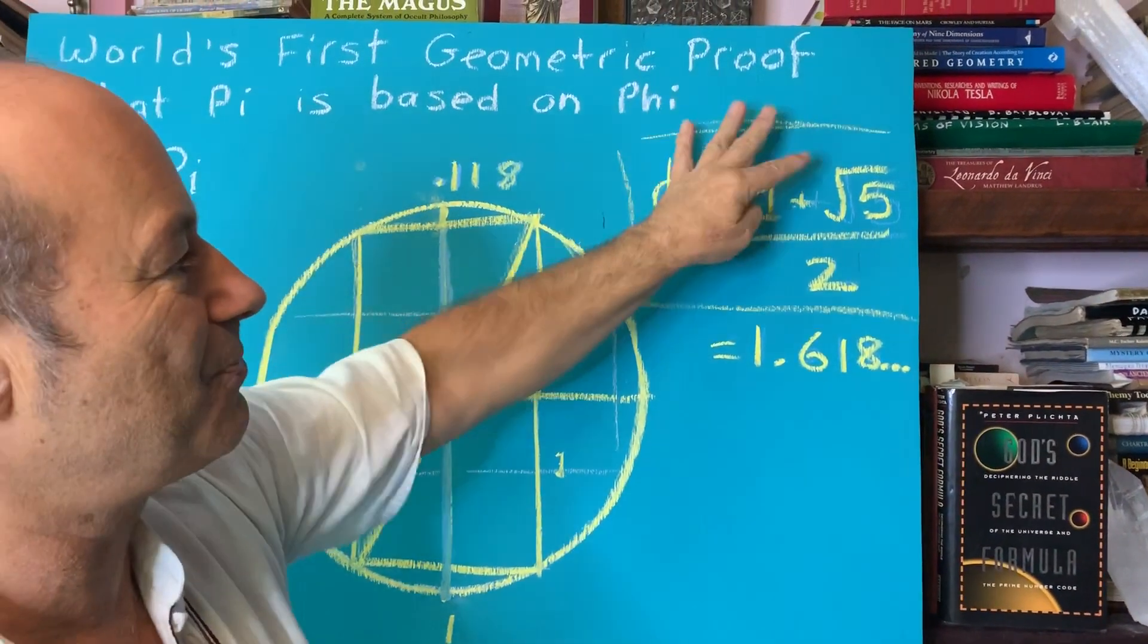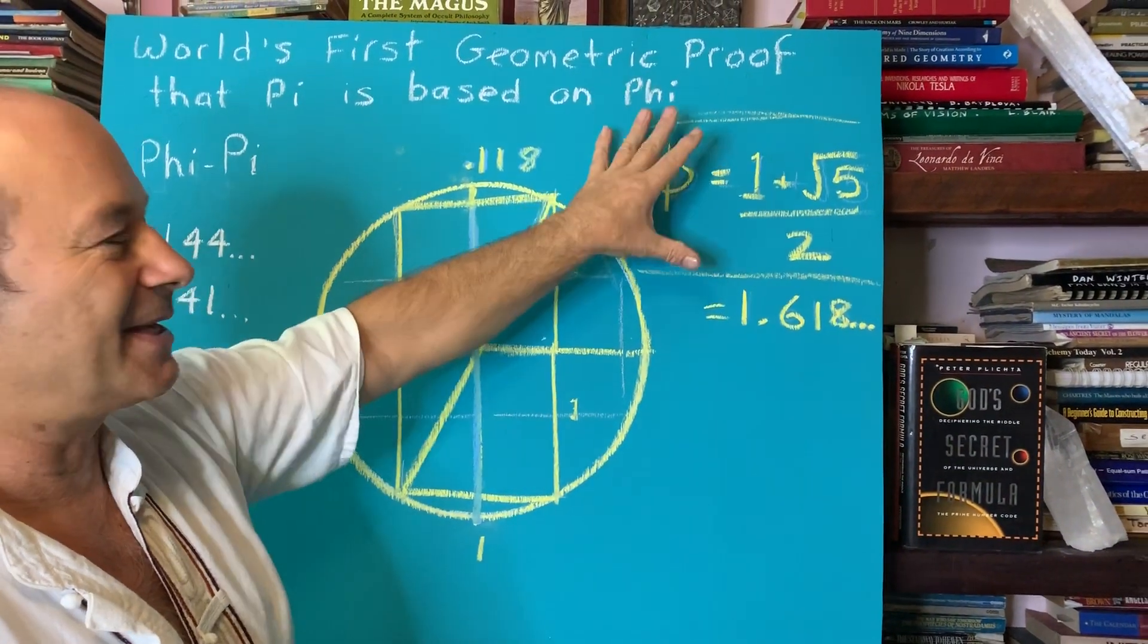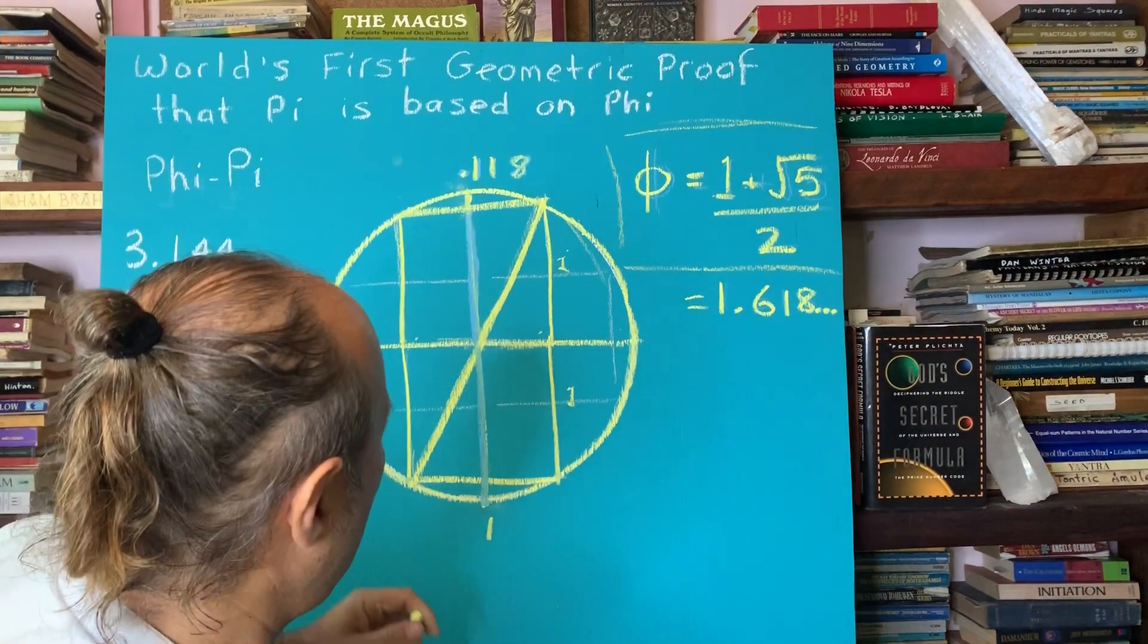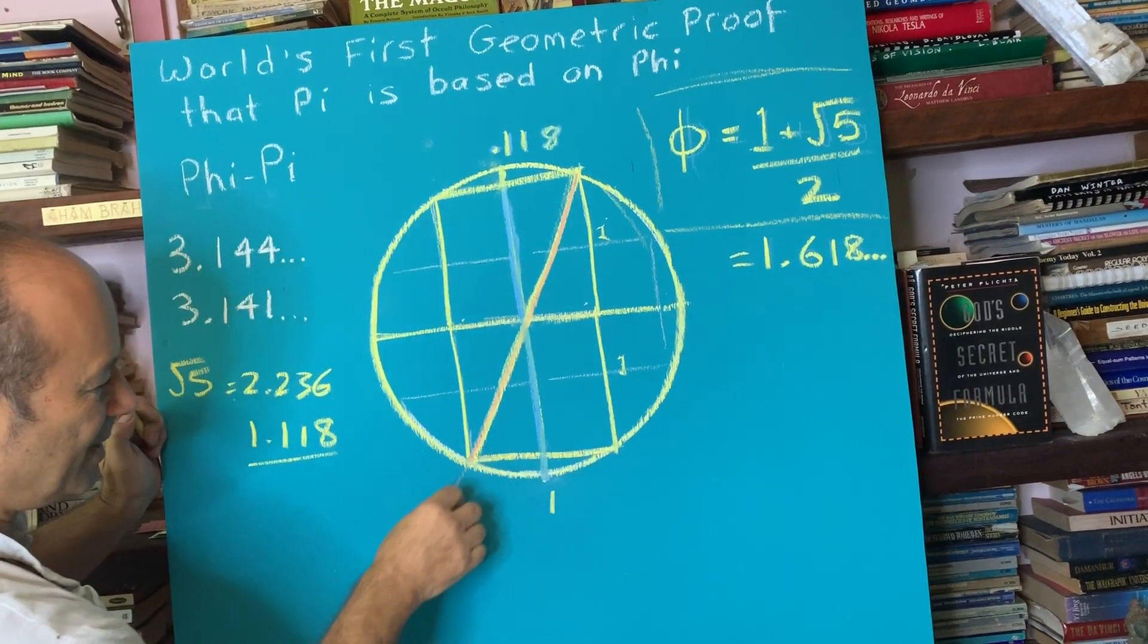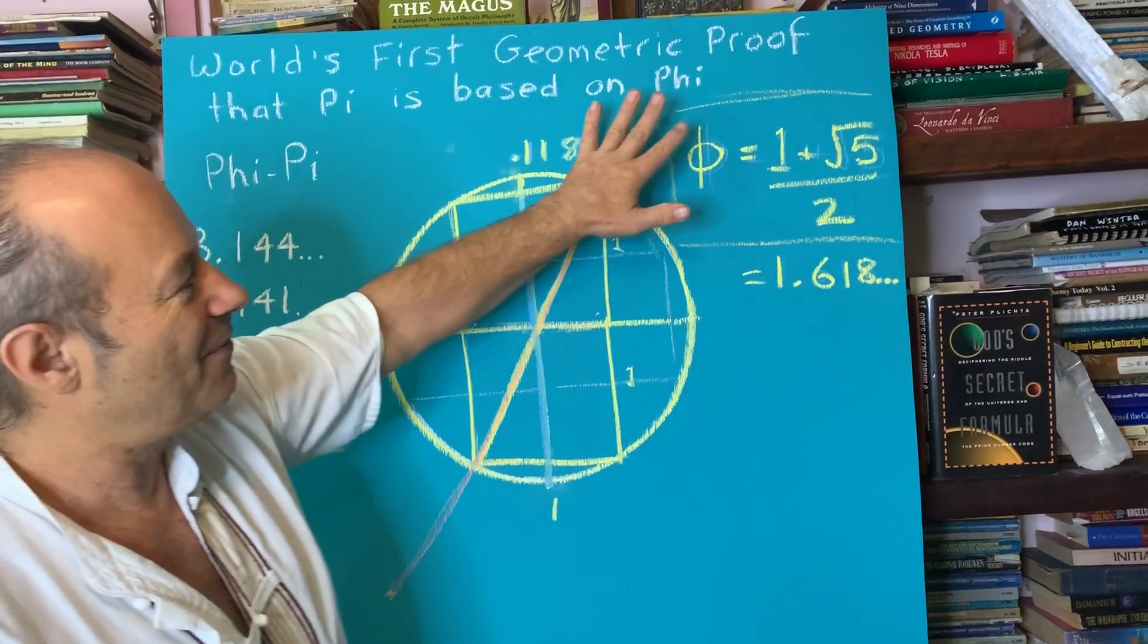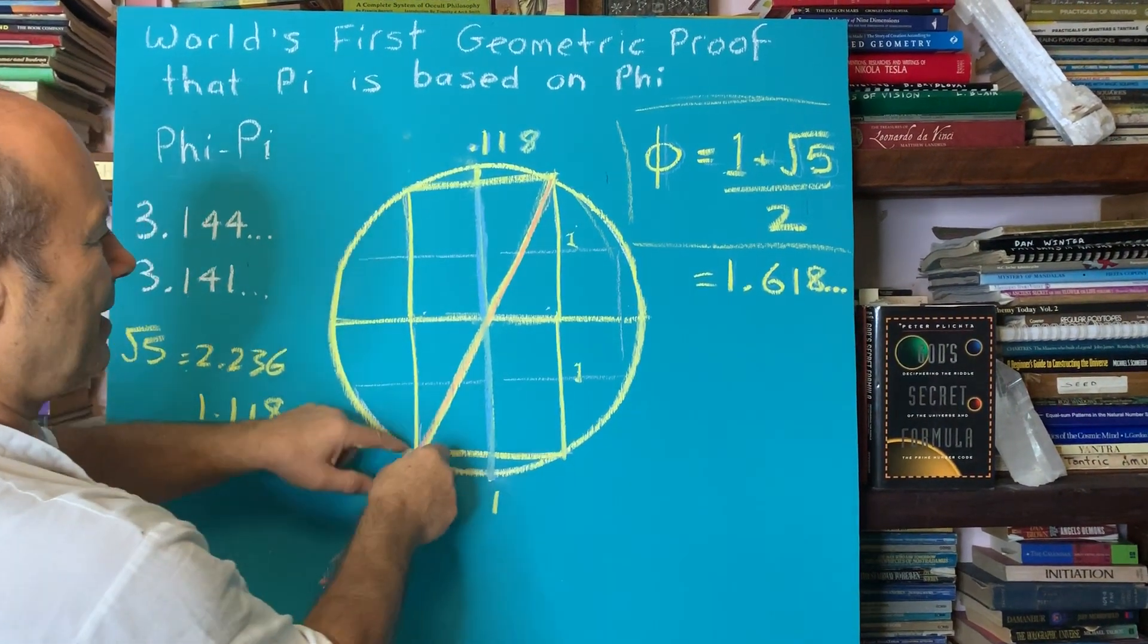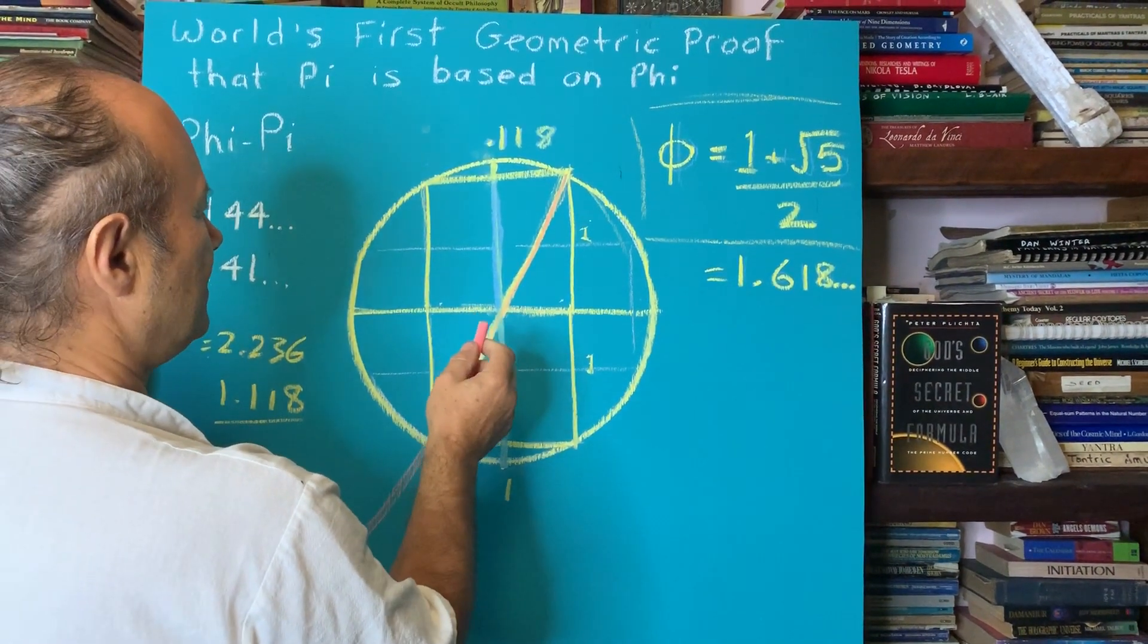So now that we have the formula 1 plus root 5 for 2, to get the phi pi relationship, I'm going to translate this ancient formula, which is the key to the harmonics of the universe, into a graphic. So here we know what that root 5 is, that distance. We know that this distance of the unit square is 1. So this is 1, this is root 5. But the formula for the golden ratio says, what is 1 plus root 5 divided by 2? So we've got to find the midpoint.